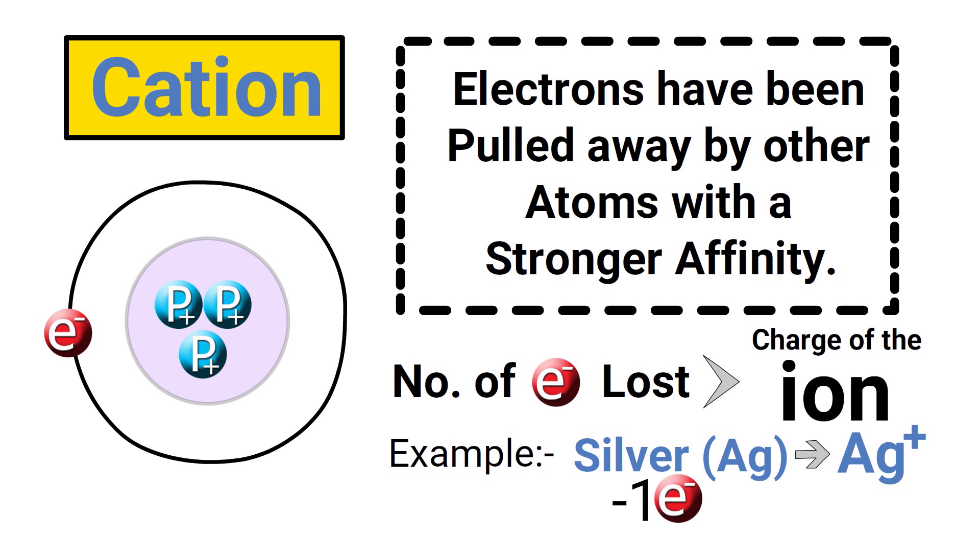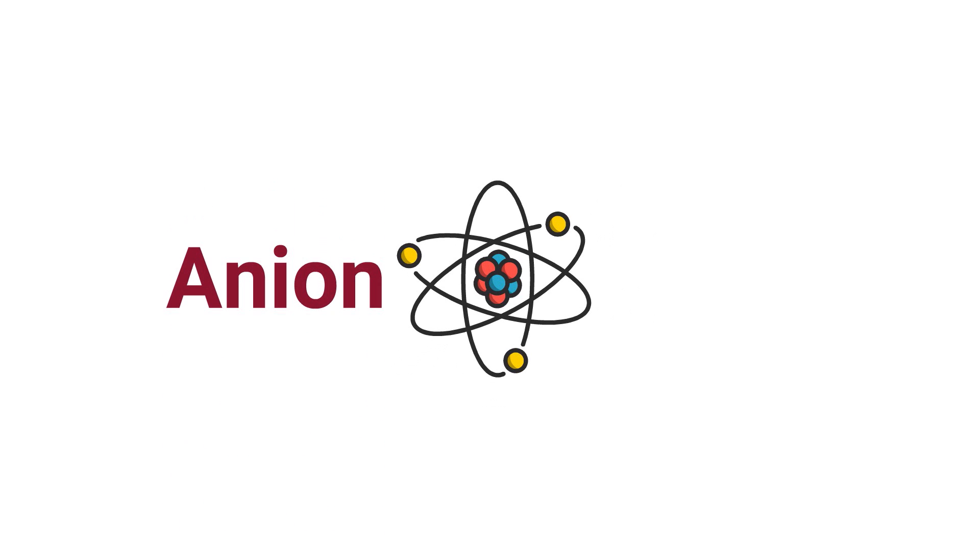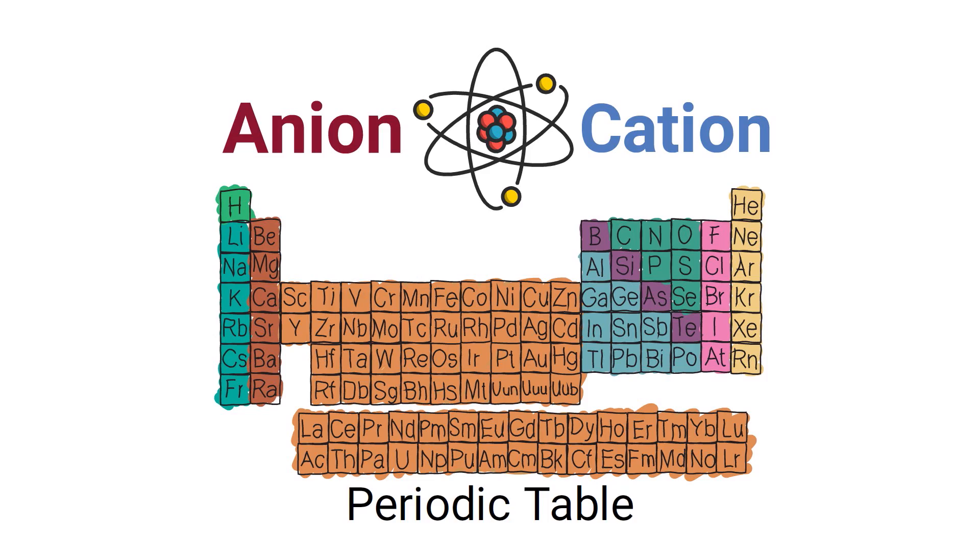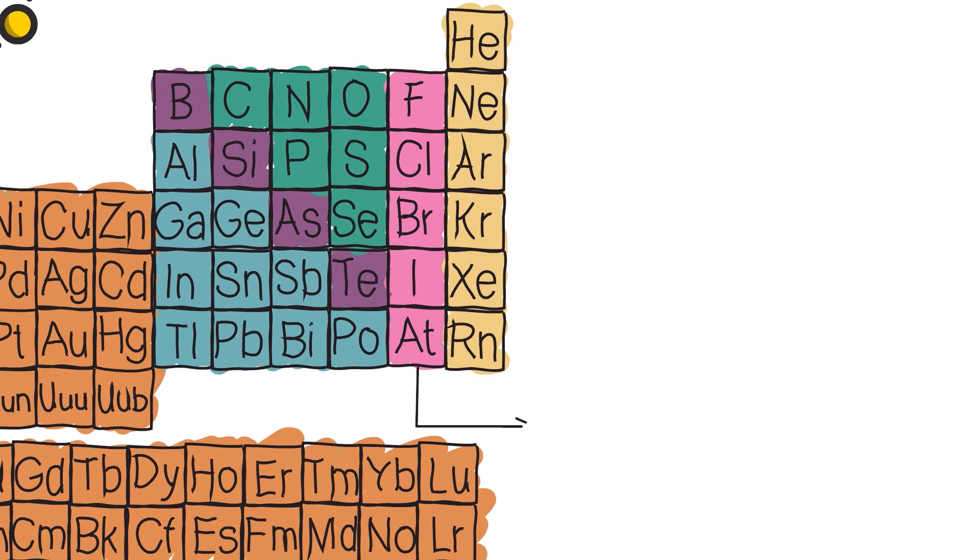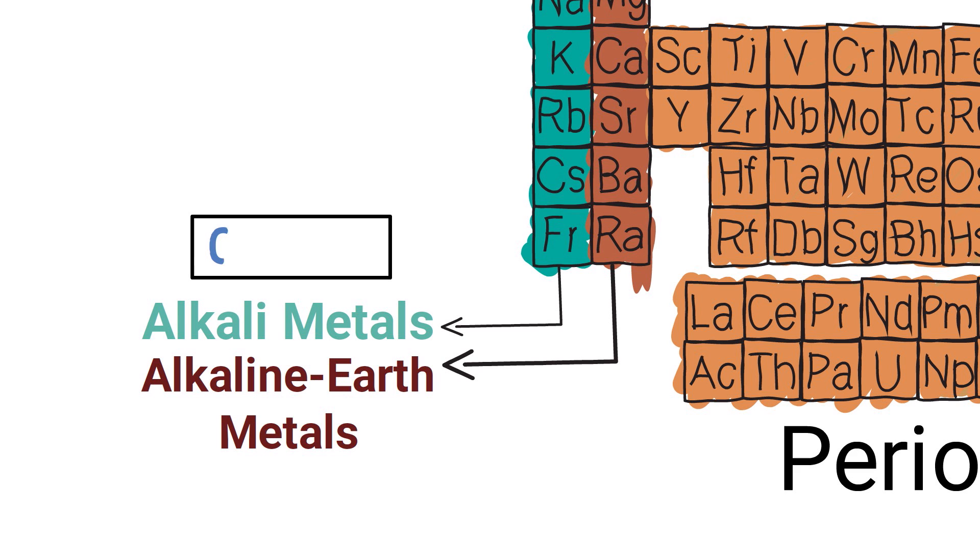In general, it's actually possible to predict whether an atom will form an anion or cation by looking at its position on the periodic table. For example, halogens always form anions whereas alkali and alkaline earth metals always form cations.